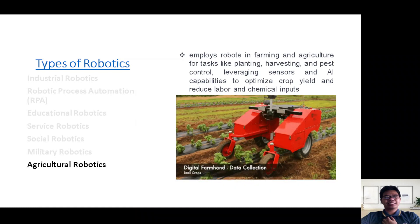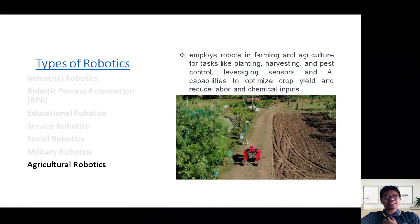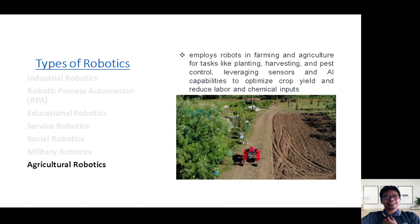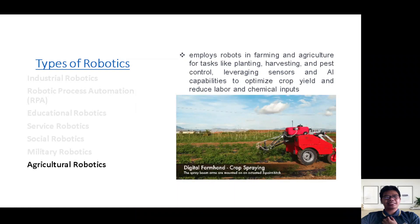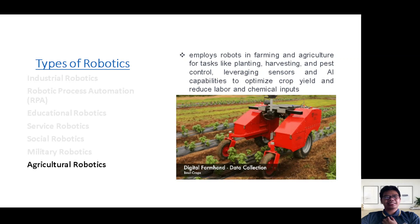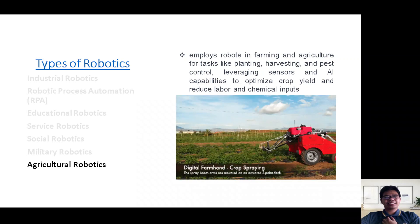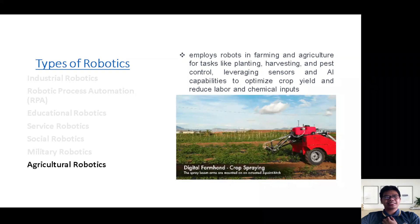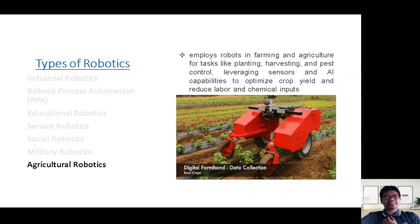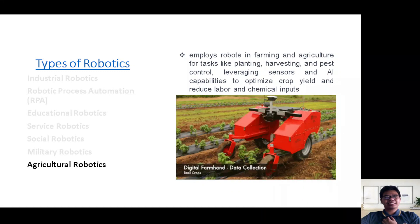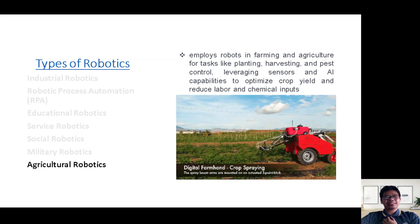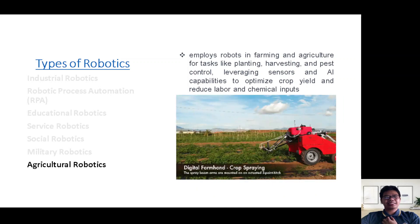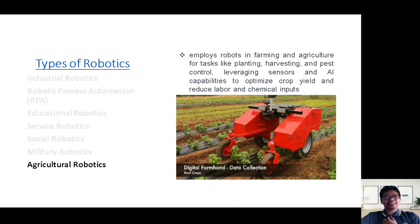These robots leverage advanced sensors and AI capabilities to optimize crop yield, reduce labor-intensive processes, and minimize chemical inputs. It's a harmonious blend of technology and nature, enhancing sustainability and ensuring food security.